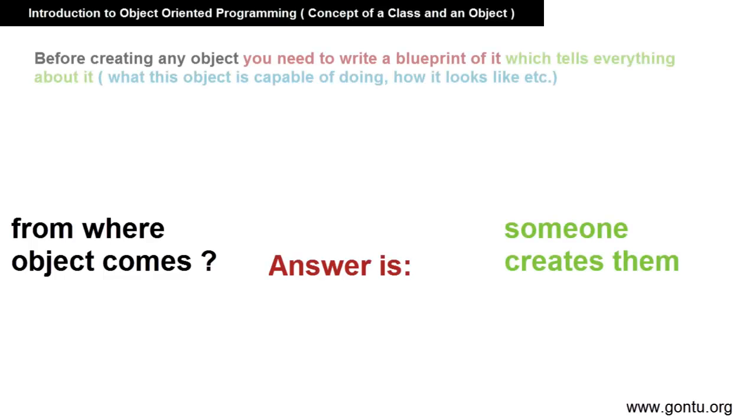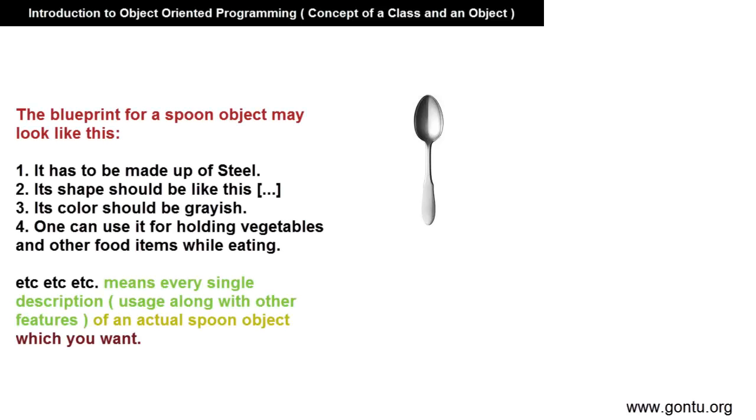Now important thing coming up. In real life, from where object comes? And the answer is someone creates them. But before creating any object, you always need to write a blueprint for the actual object. For example, for creating a spoon object in a factory, you will first need to write a blueprint or a complete description of the required spoon object.